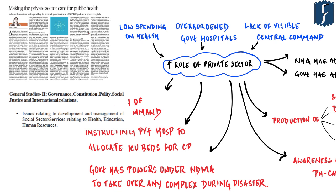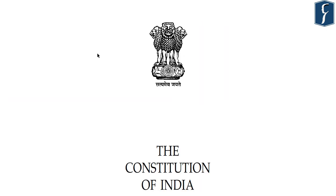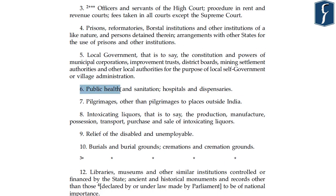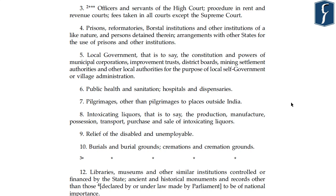The next news is a lead editorial titled 'Making the Private Sector Care for Public Health.' The author argues that India needs a national policy providing for free testing and treatment of COVID-19 patients in private hospitals. This is extremely important from GS Mains Paper 2, which covers issues relating to development and management of social sector services relating to health. Health appears in the 7th Schedule List 2 — the State List — as Entry 6: public health and sanitation, hospitals and dispensaries, making health mainly a state subject.